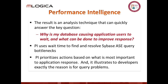The key behind performance intelligence is to be able to quickly answer questions like: why is my database causing application users to wait, and what can we do about it? In all honesty, this will tell you what's causing the wait — you'll have to figure out how to improve it. The tool did not say, Jeff, what you need to do is only bring back six out of the 800,000 rows. That's something I had to figure out myself.